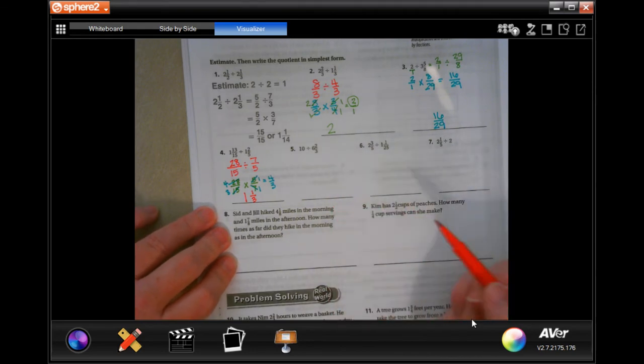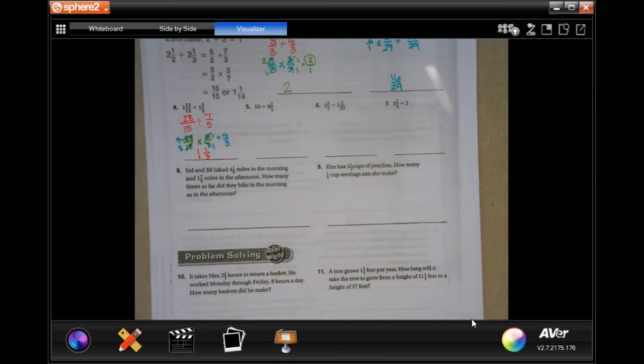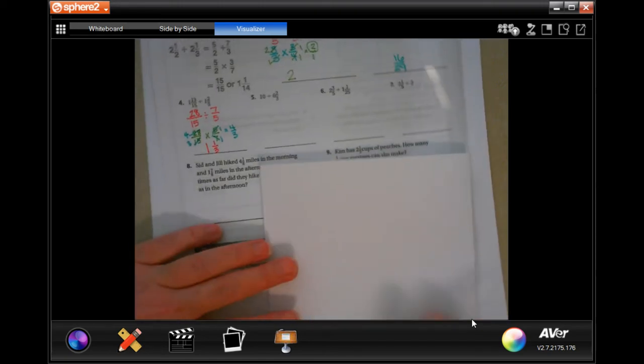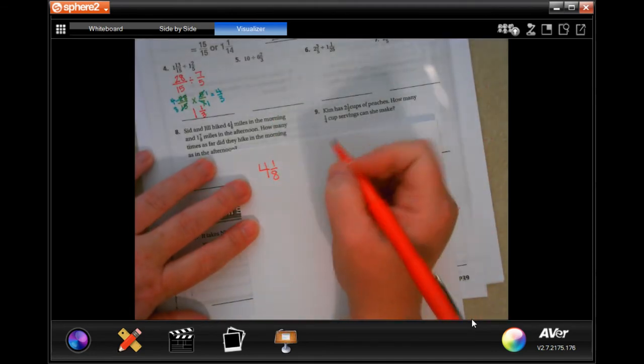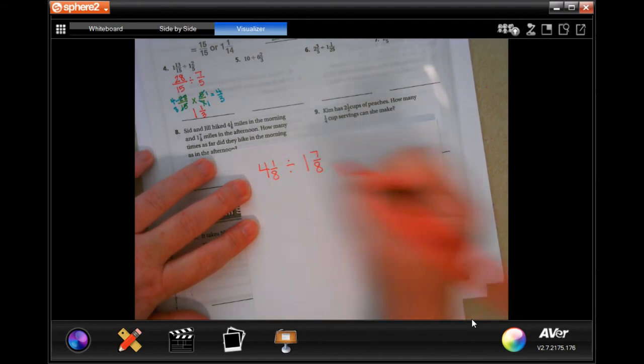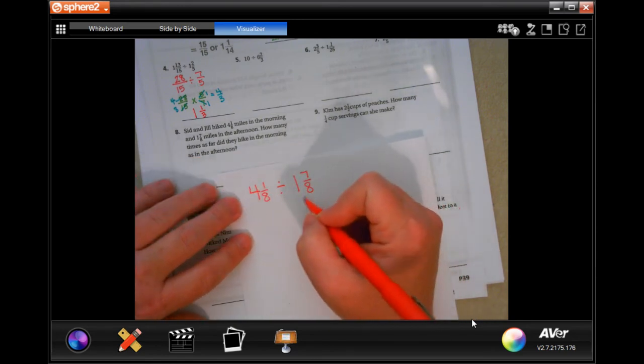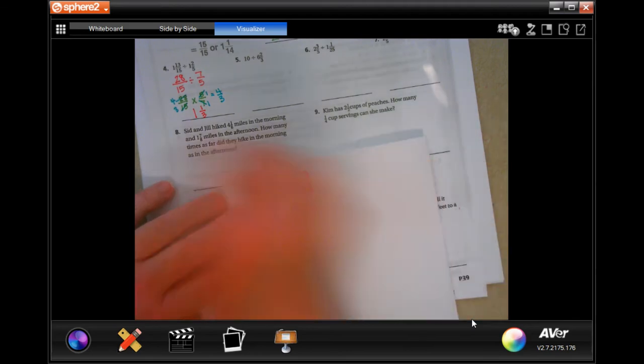You guys do 5, 6, and 7. You totally can. I believe in you. We are going to do number 8. Jill hiked 4 and 1 eighth of a mile in the morning, and 1 and 7 eighths of a mile in the afternoon. How many times as far did they hike in the morning as in the afternoon? So we have to divide the original 4 and 1 eighths by 1 and 7 eighths. So we have to do dead man.